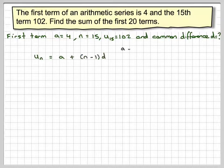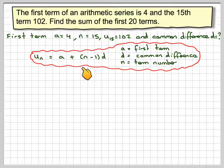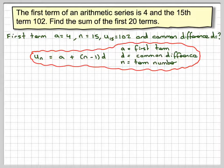We need to use that to find the first 20 terms. Using the formula: U_N equals A plus (N minus 1) times D, where A is the first term, D is the common difference, and N is the term number.